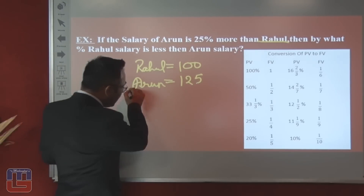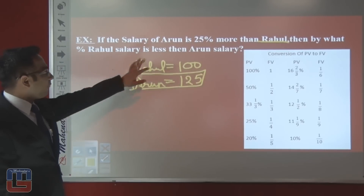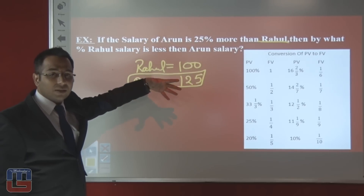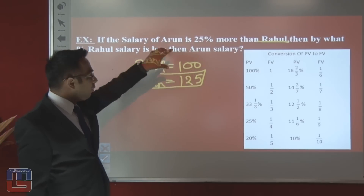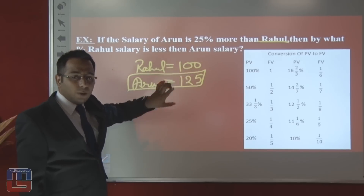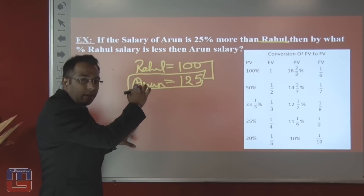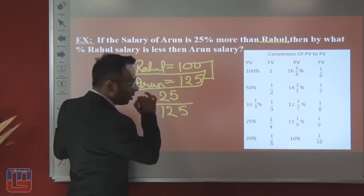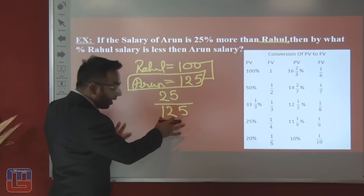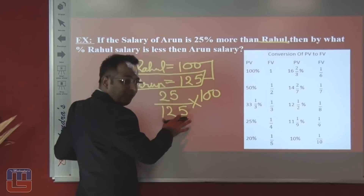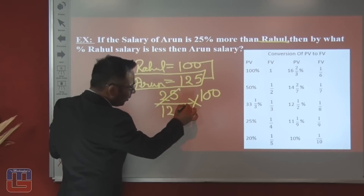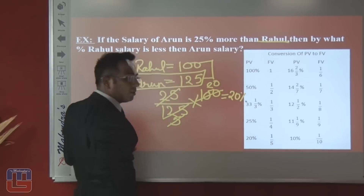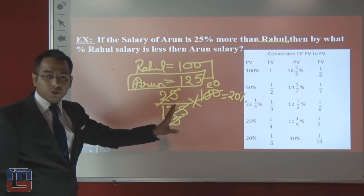The question asks: by what percent is Rahul's salary less than Arun's? Now Arun is the base for comparison. The difference is 25, and we compare it with Arun's value of 125. So 25 divided by 125, multiplied by 100 gives us 20%. Therefore, Rahul's salary is 20% less than Arun's salary.